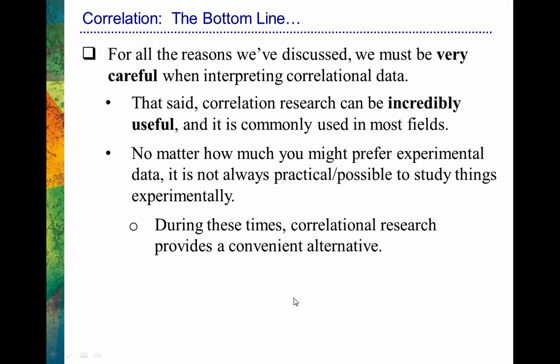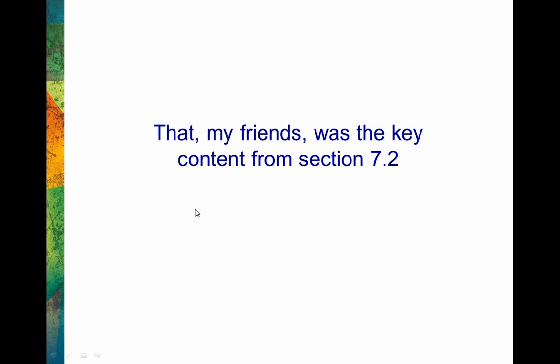For all the reasons we've discussed, we have to be very careful when interpreting correlational data. However, don't get too down on correlational research — it's awesome research. There are times when we simply cannot do experimental studies, either because it's impractical or impossible. In those cases, we have to do correlational research, and it will eventually get us to the truth. It just might not be as efficient as experimental research in determining causality. That's the key content from section 7.2 — that is all.